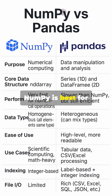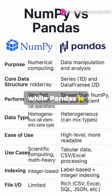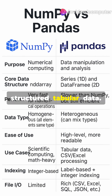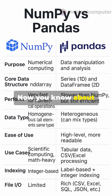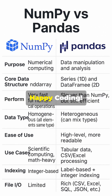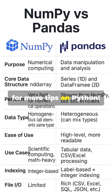So, NumPy is best for fast numerical calculations, while Pandas is ideal for analyzing and manipulating structured tabular data. Now you know about NumPy and Pandas in Python. Happy coding! Like, share, and subscribe for more tips on Python.